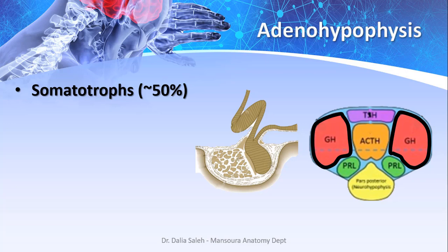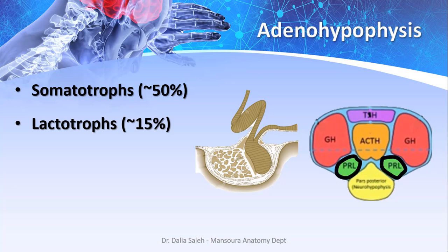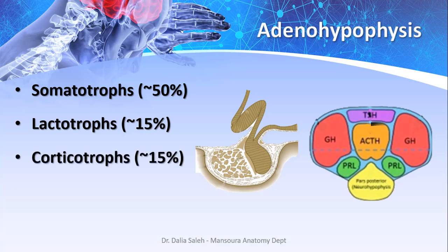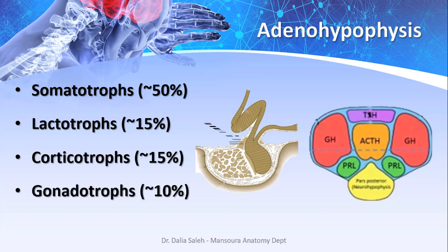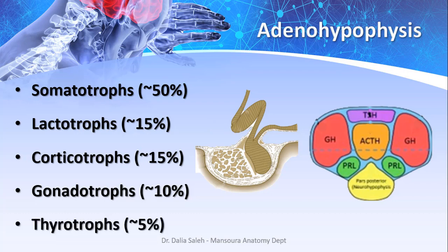The lactotrophs, also about 15% of total pituitary cells, lie at the posteromedial and posterolateral aspects and secrete prolactin. The corticotrophs, again about 15%, lie at the median region and secrete hormones including ACTH. The gonadotrophs are about 10% of total cells; they mainly lie in the pars tuberalis and secrete FSH and LH. Finally, the thyrotrophs are about 5% of total cells; they lie at the most anterior region of the pituitary gland and secrete TSH.